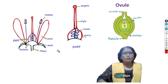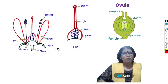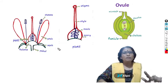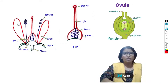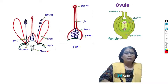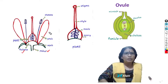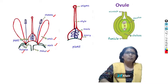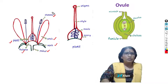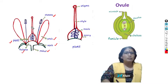What is angiosperm? It is very simple — a flowering plant that produces fruits with seeds inside. Here is a simple diagram of a flower. The stalk of the flower is called the pedicel. Above the pedicel, a broad structure called the thalamus is present. On the thalamus, four floral parts are arranged: sepals, petals, stamens, and pistil. Stamen is the male sex organ and pistil is the female sex organ.